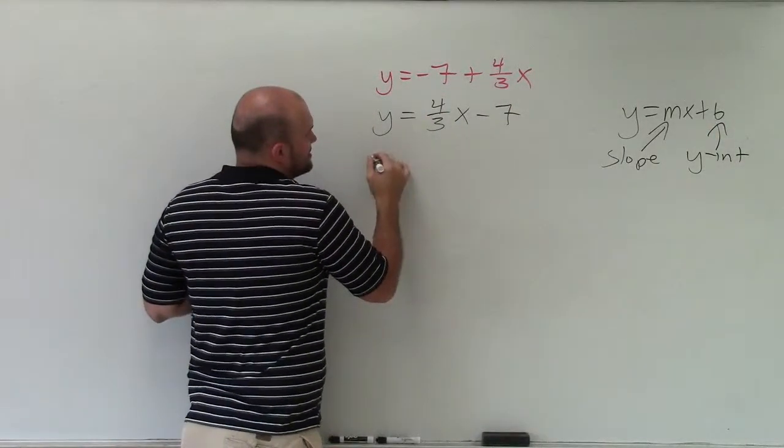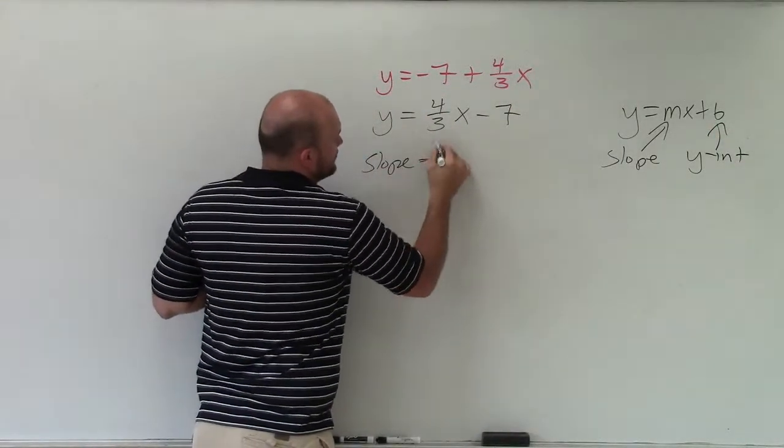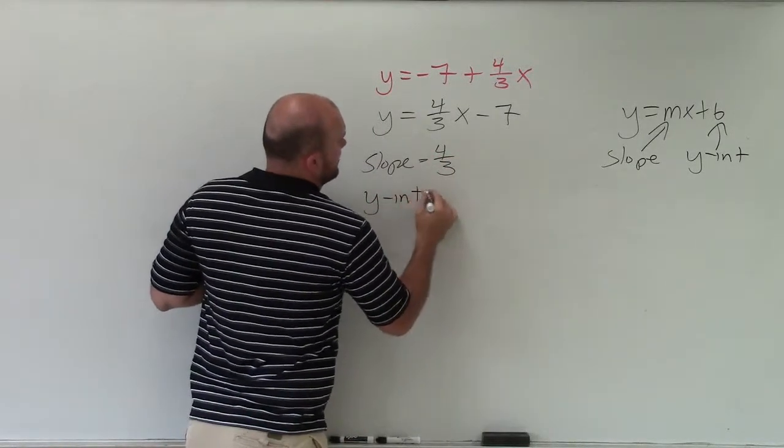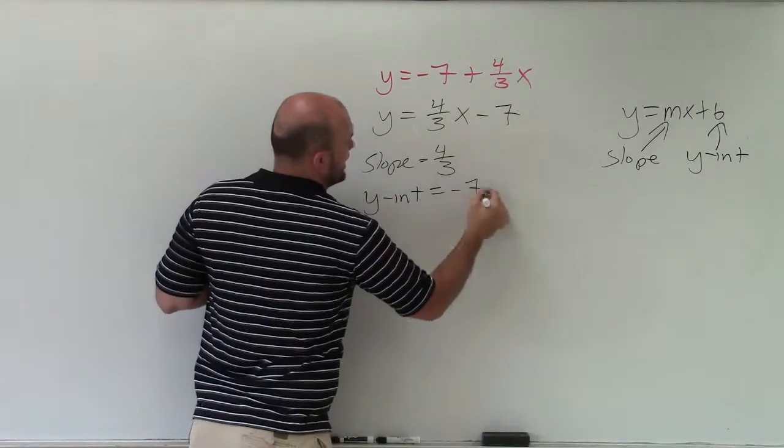So therefore, I can just say the slope in this equation is 4 thirds and the y-intercept is equal to negative 7.